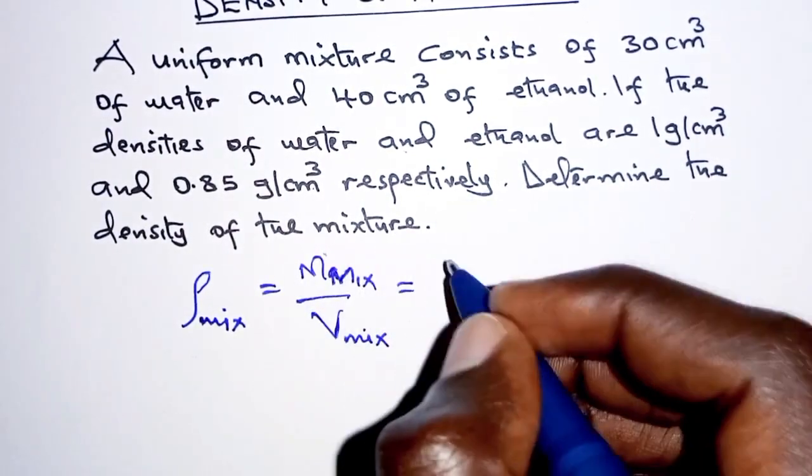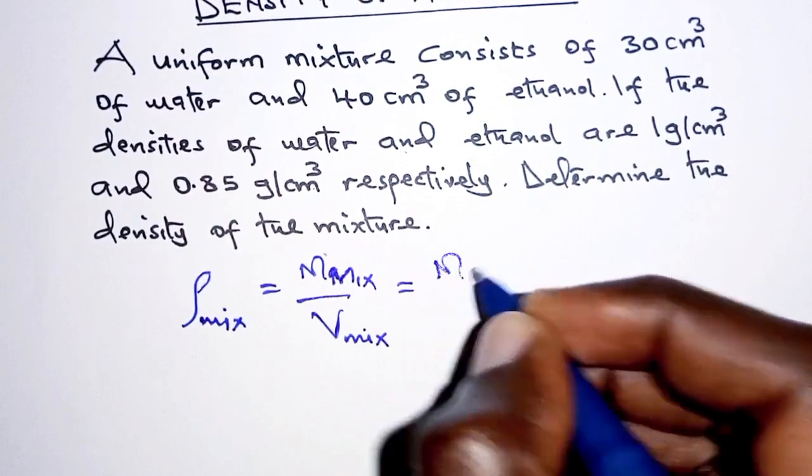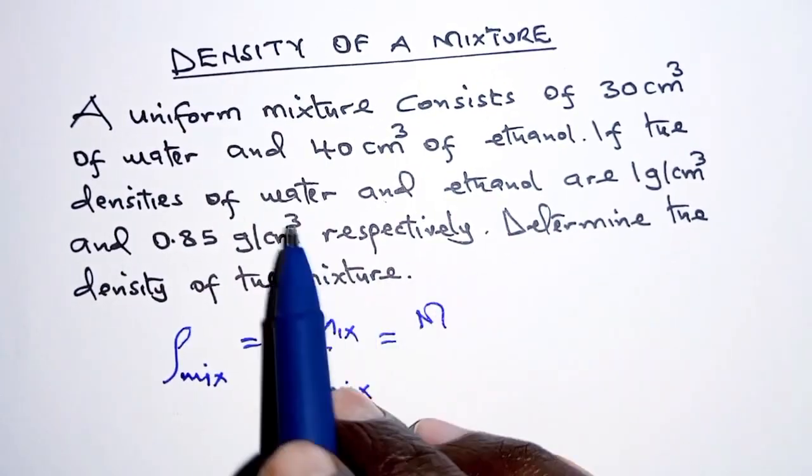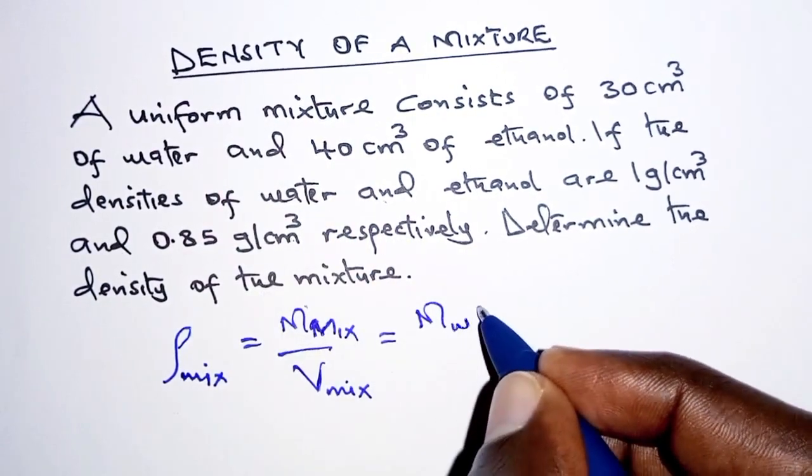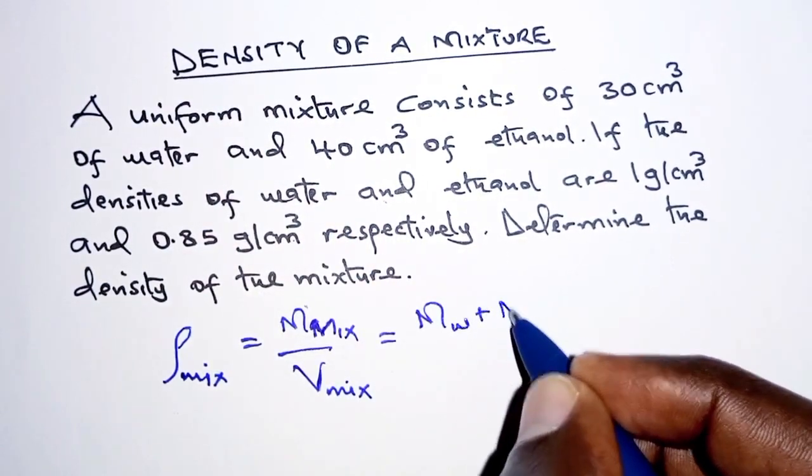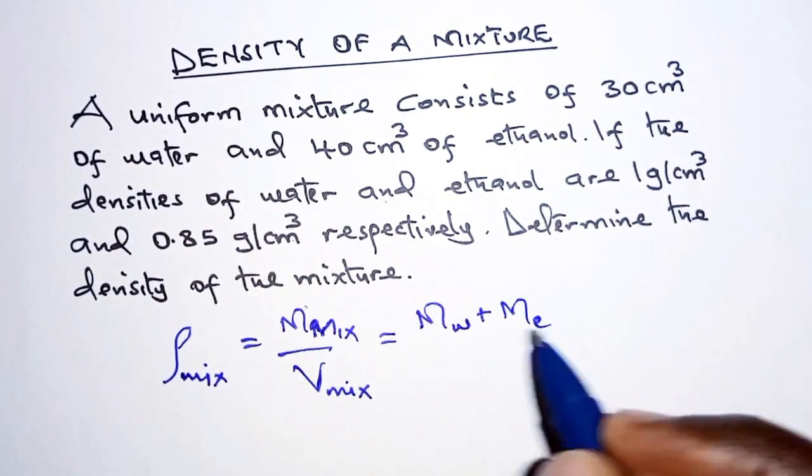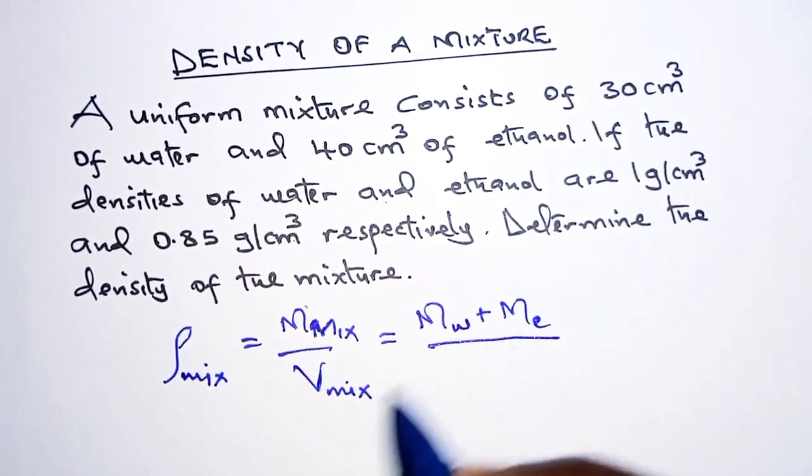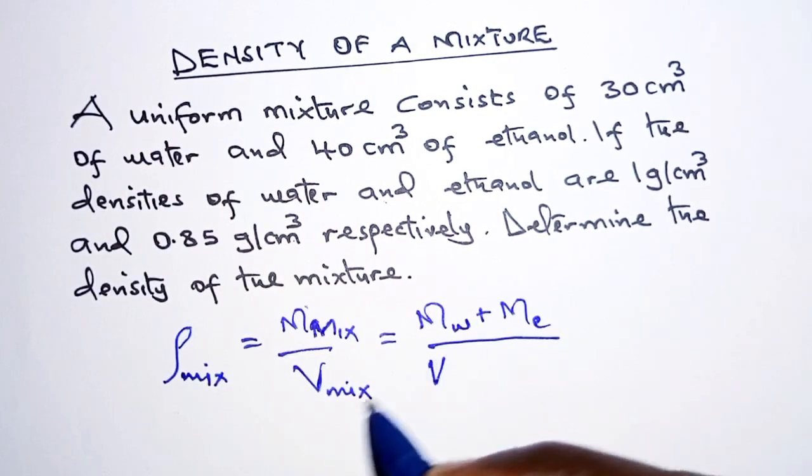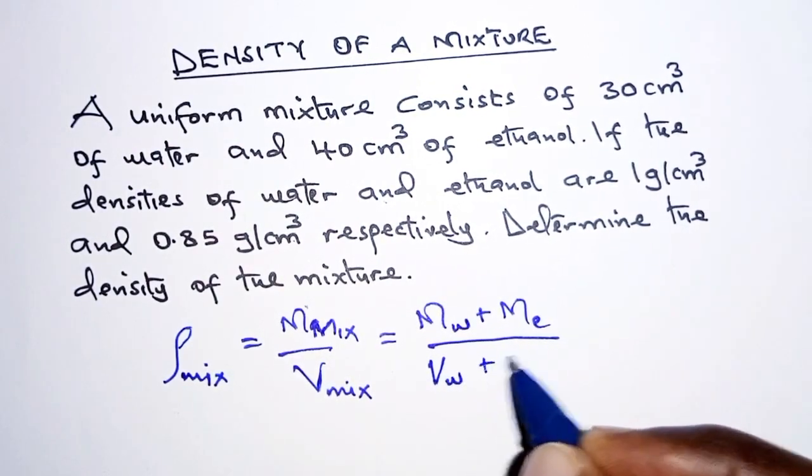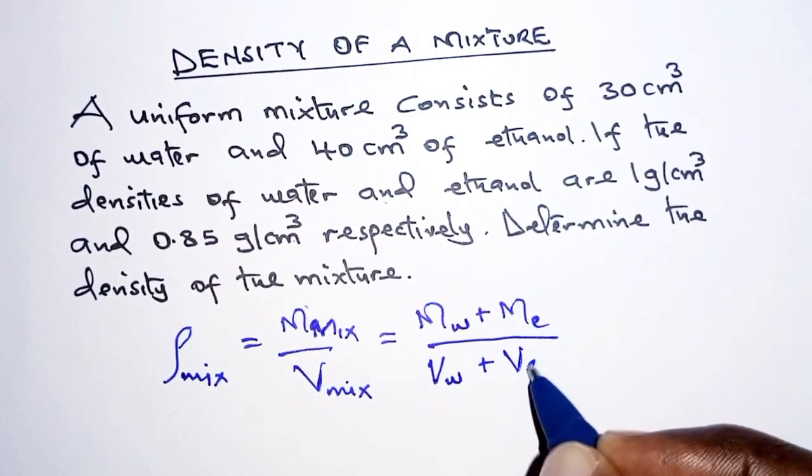The mass of the mixture will be—remember we have water and ethanol being mixed—the mass of water added to the mass of ethanol, and then on the denominator we have volume of water plus volume of ethanol.